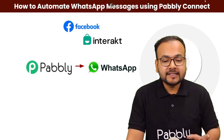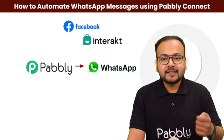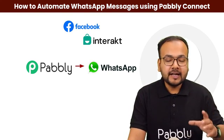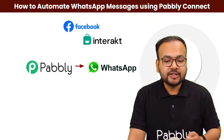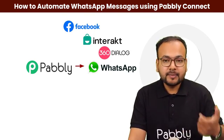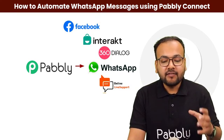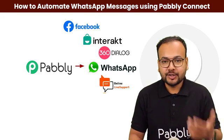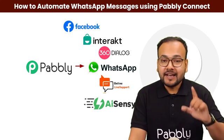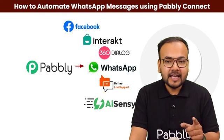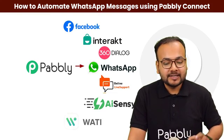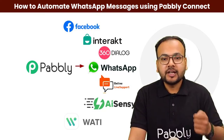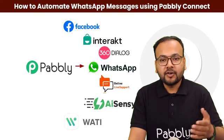The next application we provide is Interakt. Interakt is also a WhatsApp API provider by which you can send automatic transactional and promotional messages on WhatsApp. Next is 360 Dialog, which is a similar application to Interakt. Then we have Online Live Support to create a chatbot for live support to your customers. Then we have AI Sensei, a very good tool to access WhatsApp's API and automate your business. And Vadi, also a popular WhatsApp API provider which you can integrate with using Pabbly Connect.